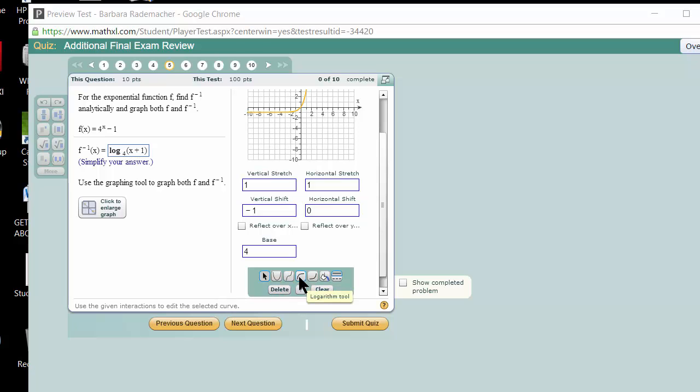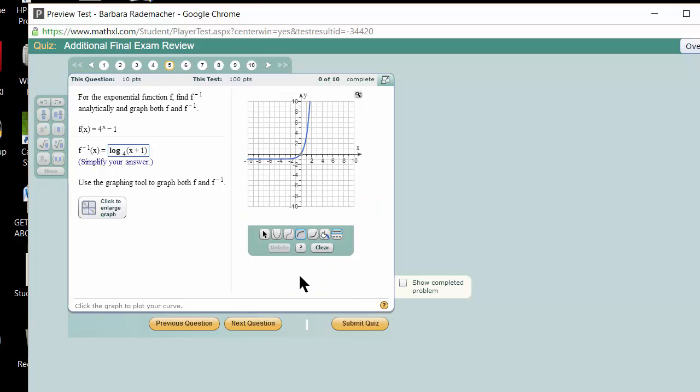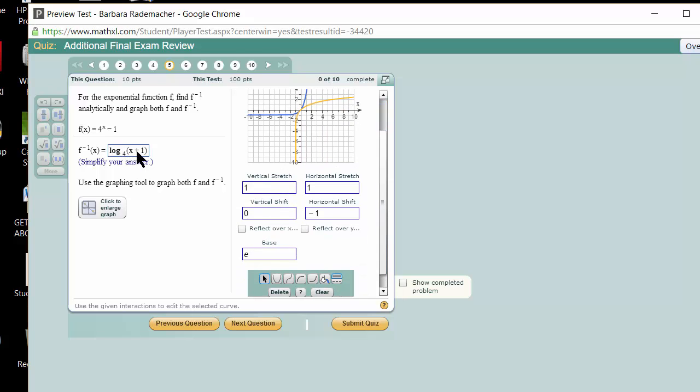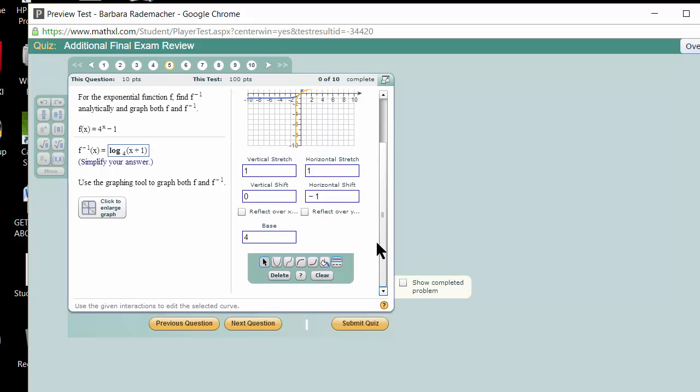Now, I'm going to choose the logarithm graph. And, there we go. So, I decided on 3, 1. Click. Now, I come down here. No stretching, but now we have a horizontal shift to the left 1. Remember, the horizontal shift is always in the parentheses, and it moves in the opposite direction from that sign. Now, our base is still 4. And, so, I believe I am right here.